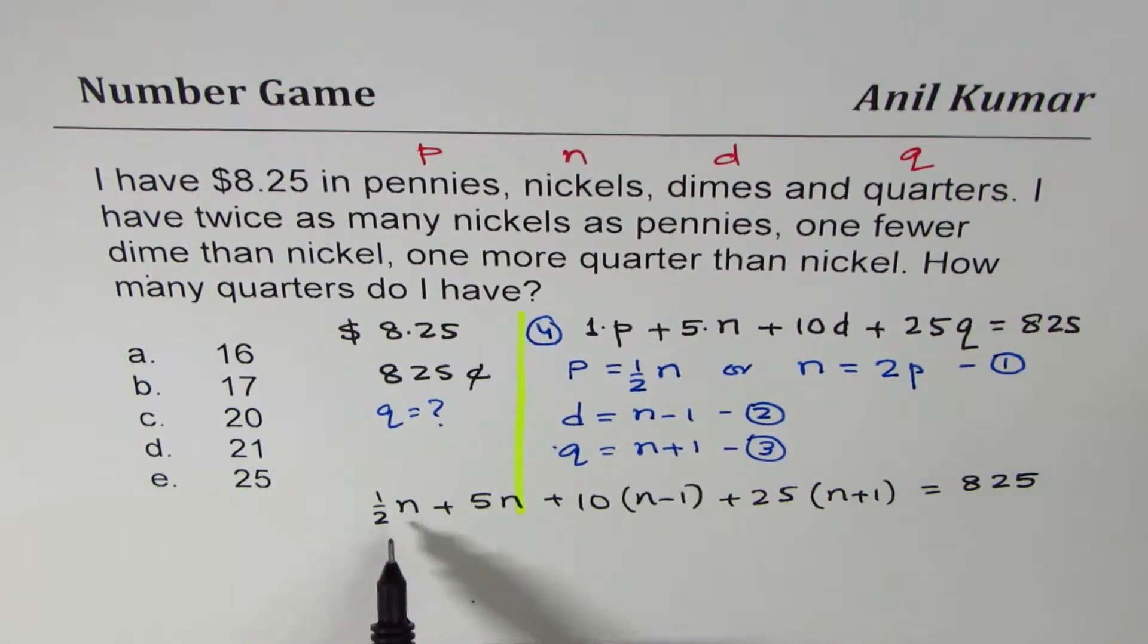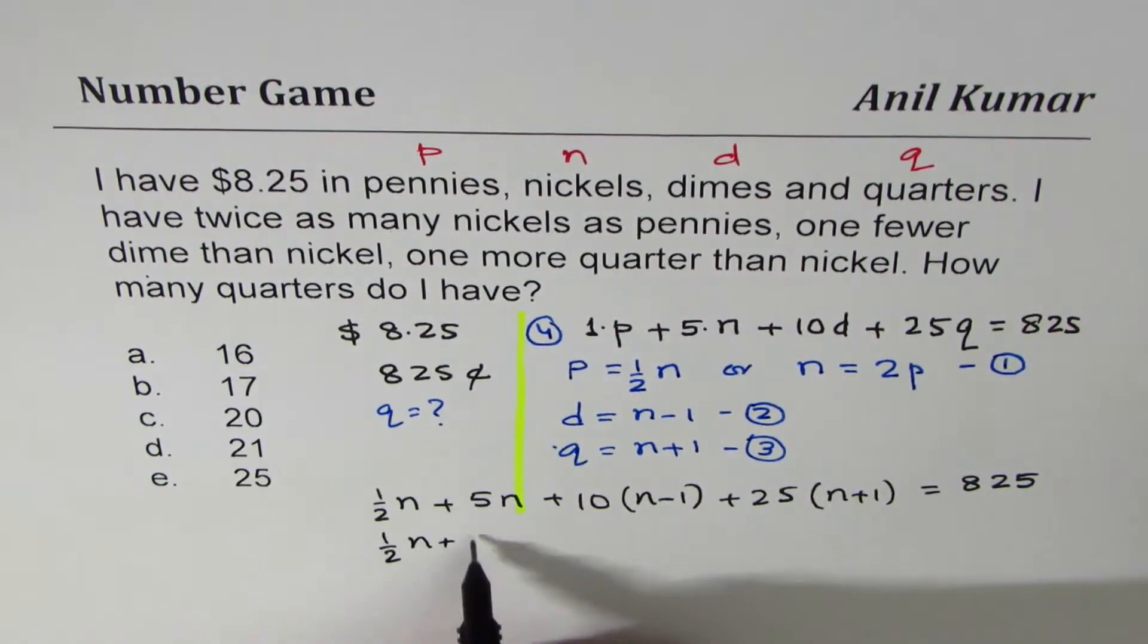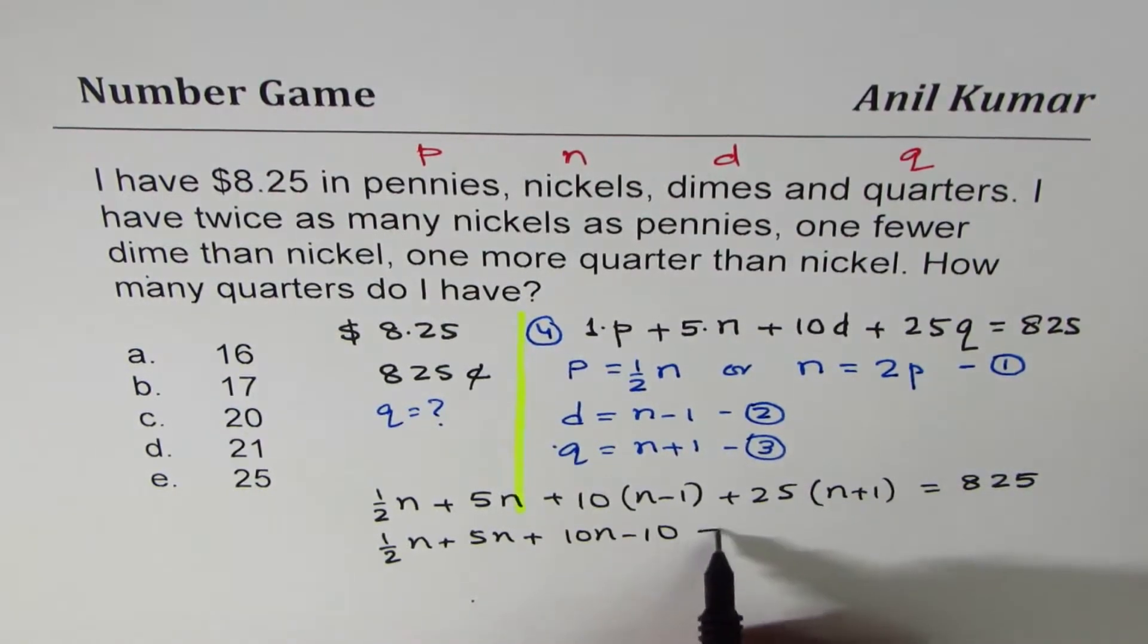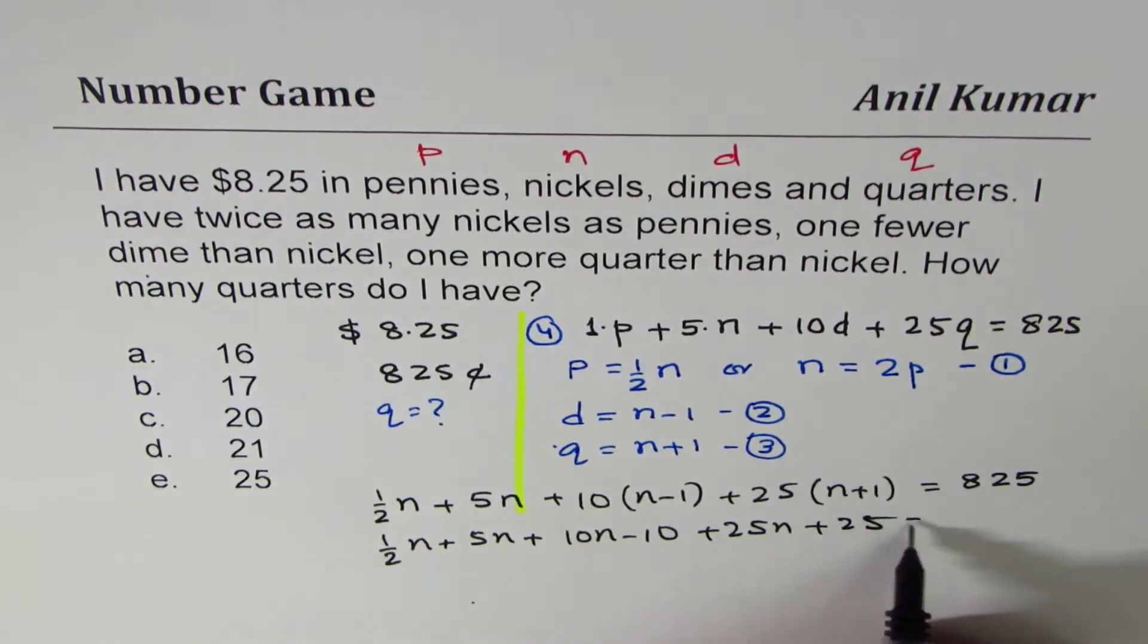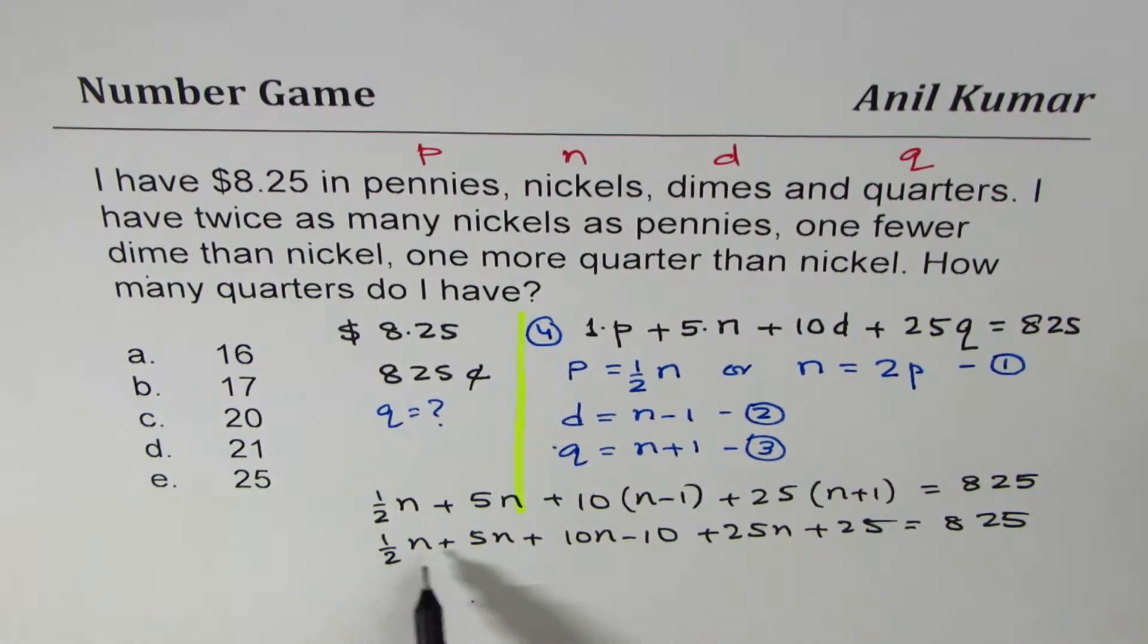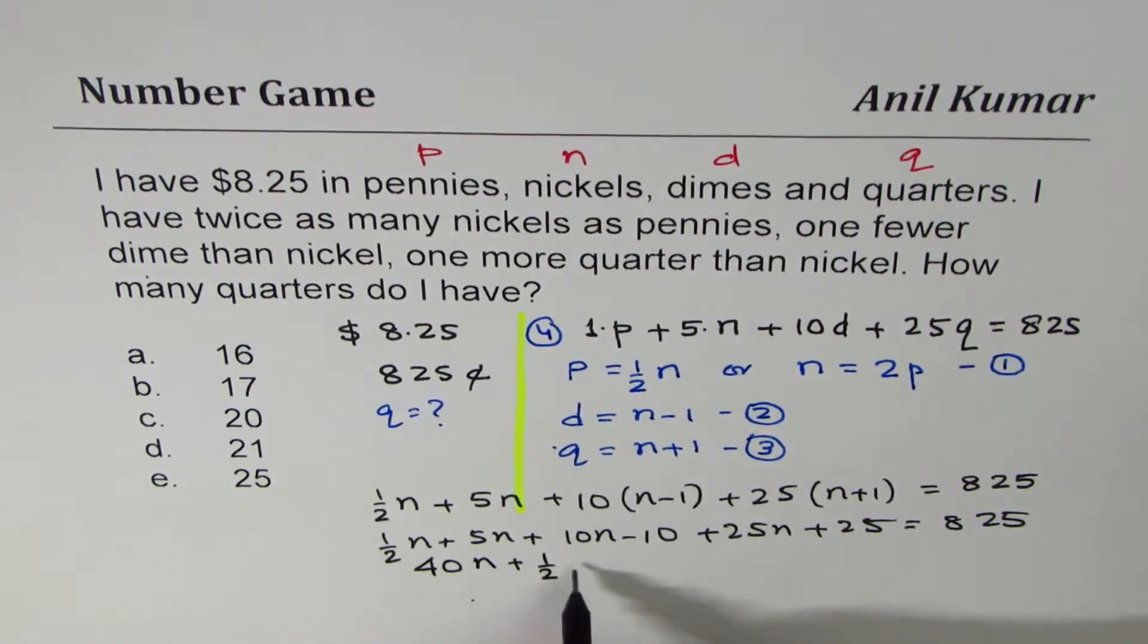We have an equation in nickels. We'll add all these numbers. Half N plus 5N plus 10N minus 10 plus 25N plus 25 equals 825. As far as nickels are concerned, we have a half here. 5 and 10, 15. 15 and 25, so 20, 40 nickels. We are left with 40.5, 40 and a half nickels. I'll divide this into two parts, 40. So we have 40N plus half N. And the numbers is minus 10 plus 25 means plus 15 equals 825.